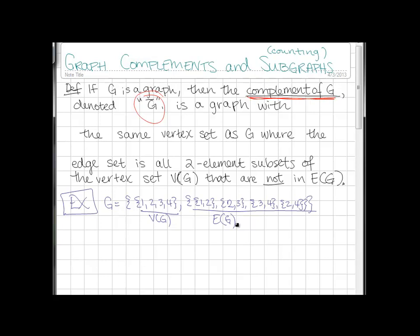So we're going to draw a picture of it so you can see how this graph complement thing works out. This is a graph of G. You can see we have the edge 1,2, the edge 2,3, 2,4, and 3,4.